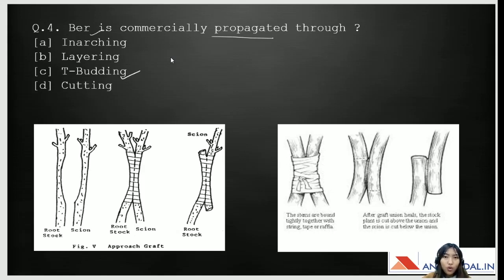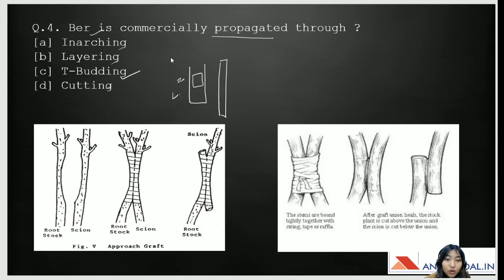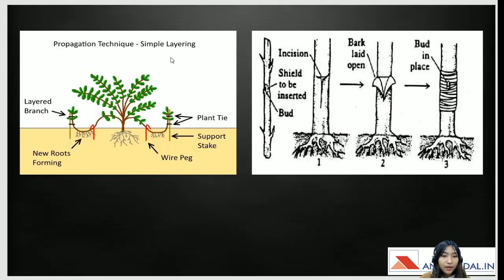Let's discuss all the propagation methods. In inarching, we have a scion and a stock. We cut a small patch — about 5 cm length and 2 mm thickness — on the scion and a matching patch on the rootstock, then bind them together using polythene or alkathene. After about a month, once the union is complete, we cut the upper section of the rootstock and the lower section of the scion, forming a new individual.